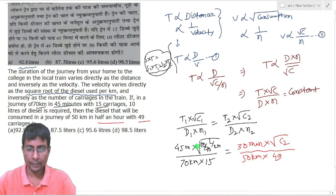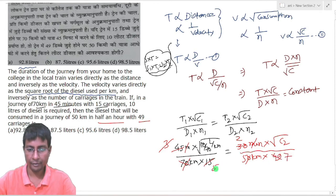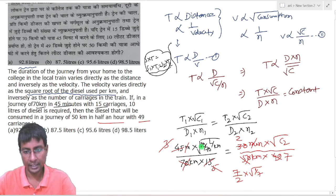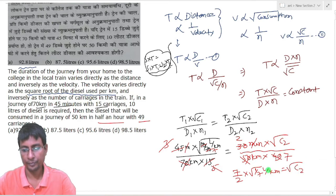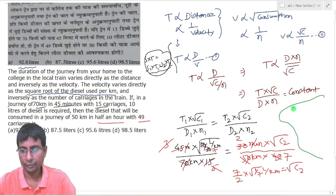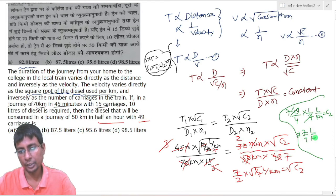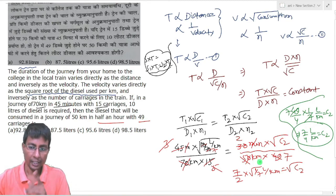Cancelling: minutes cancel with minutes, 15 and related terms cancel, 70 and 7 cancel, and 5 cancels out. The ultimate equation gives: root under C2 equals (7/2) into root under (1/7), since 10 becomes 1/7 liters per km after cancellation. Squaring both sides: C2 equals 49/4 into 1/7 liters per km, which simplifies to 7/4 liters per km.